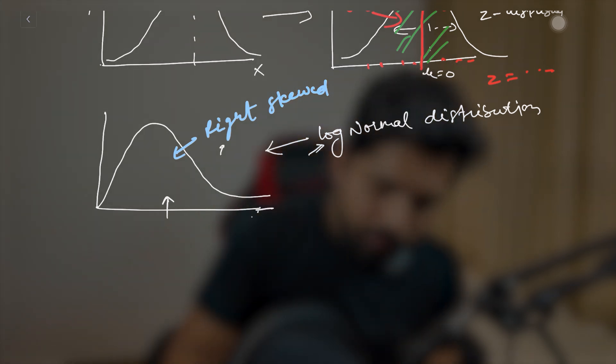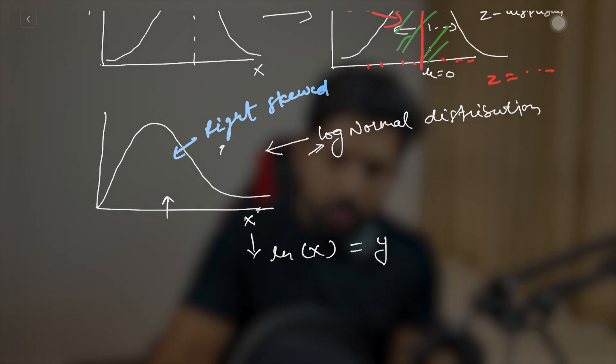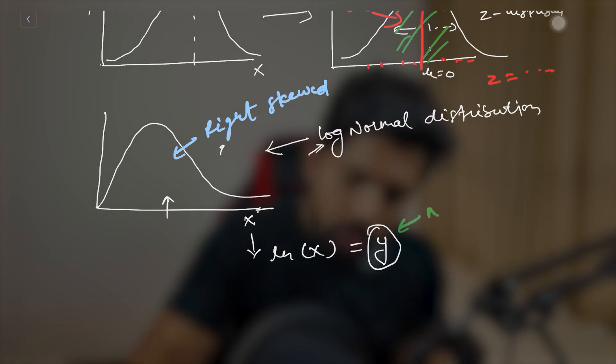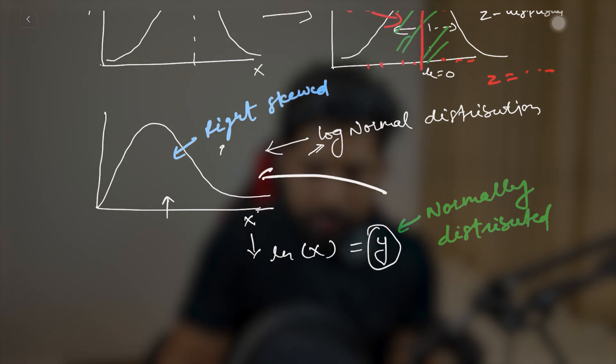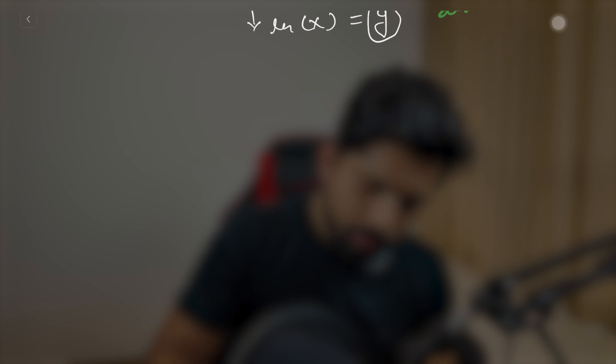Why do we use the log normal distribution? When we have data and visualize it and find that it is right skewed, we consider that data as log normally distributed. To verify this assumption, let's say our data is x. We take the natural log of x and get another value y — another random variable. If this y is normally distributed, then we can confirm our assumption that the data follows a log normal distribution.